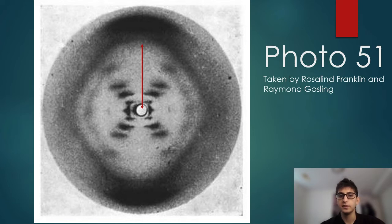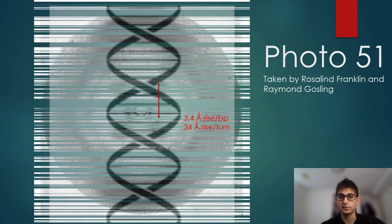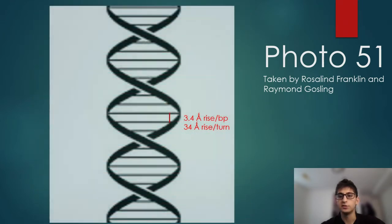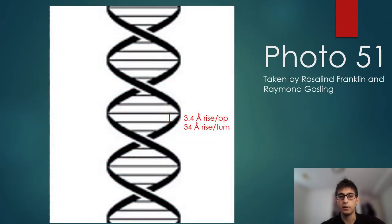The estimation of the number of bases per turn has to do with where the most intense spots lie, which is at the top and at the bottom of the diamond. These are the 10th layer line of reinforced waves, indicating that each turn of the helix consists of 10 bases, yielding a 34 angstrom rise per turn.